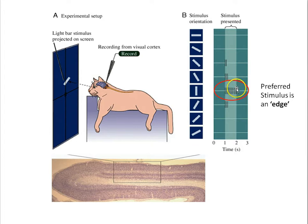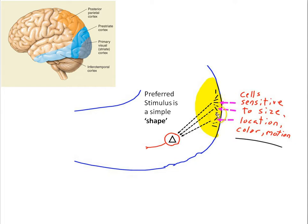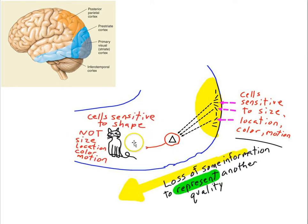These are sometimes called edge detectors or orientation cells. What's interesting is that as you move from the primary visual cortex down through the visual pathway into the temporal lobe and record to find preferred stimuli for cells further along, the preferred stimulus gets more complicated. Cells farther along the neural pathway start to have preferred stimuli along the lines of angles or simple shapes, and even further along, you can find cells that respond to different kinds of animals, or tools, or other complex objects.